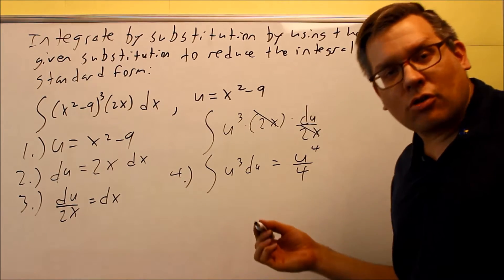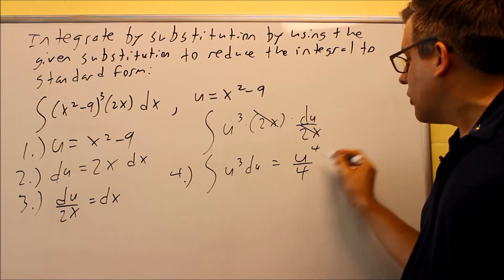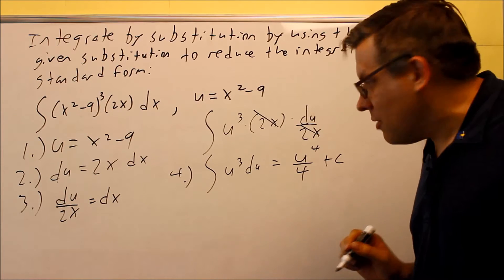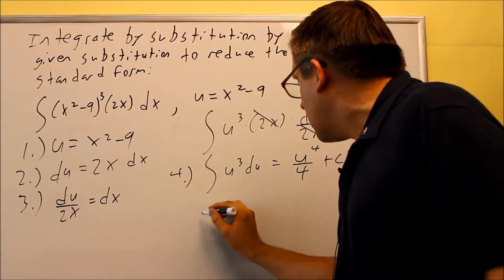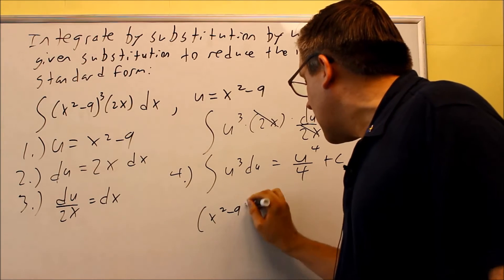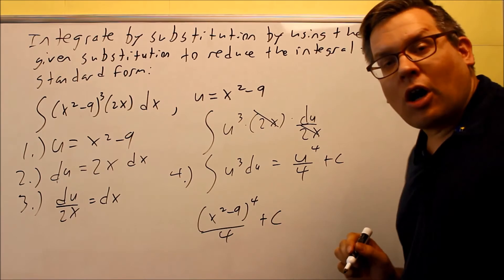This is actually going to be your step 4 now. Step 4 is when you actually integrate it and then you put the u back in. So step 4 here, we're going to take the anti-derivative, u to the 4th over 4 plus c. And then also in that same step we're going to put the u back in so we get x squared minus 9 to the 4th power over 4, and then plus c.